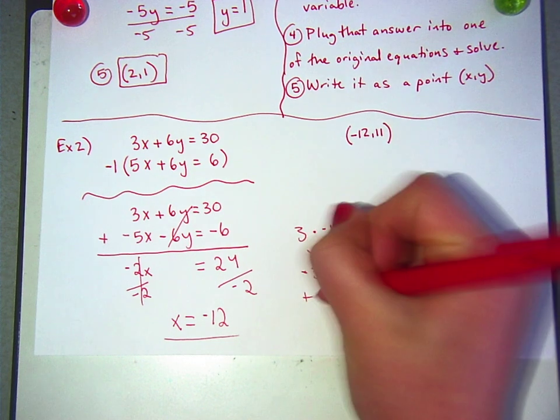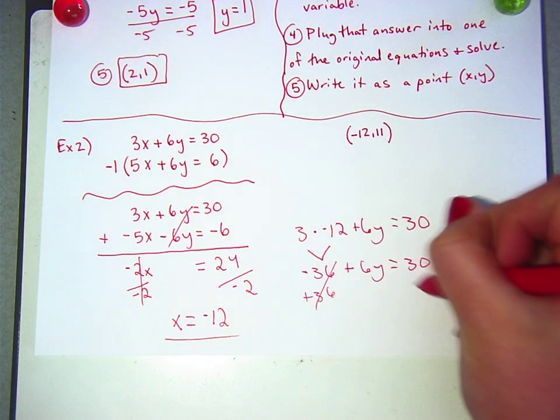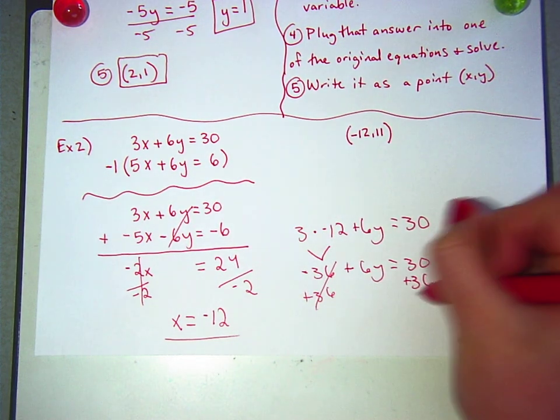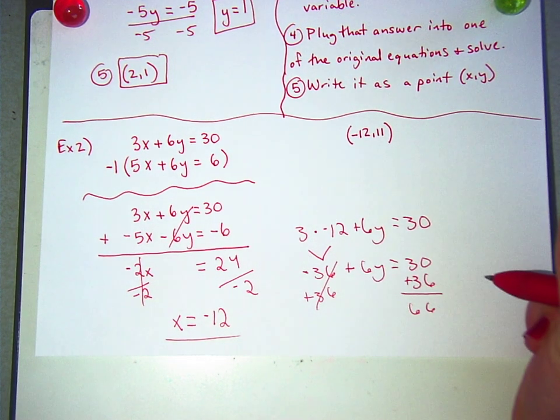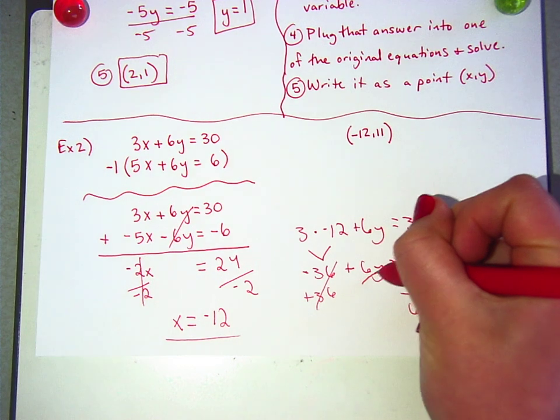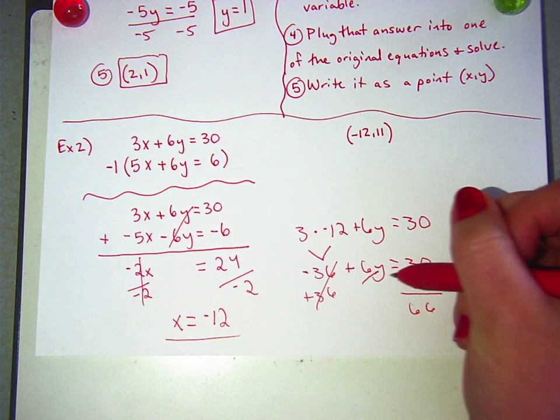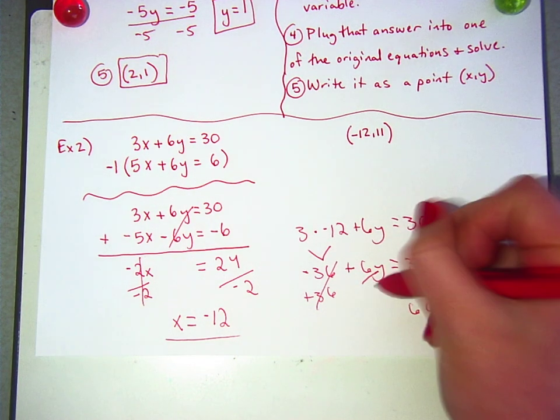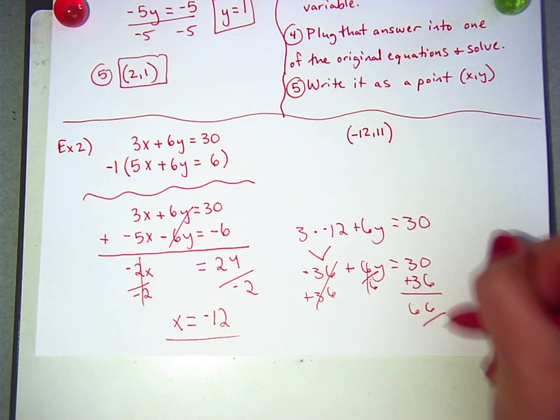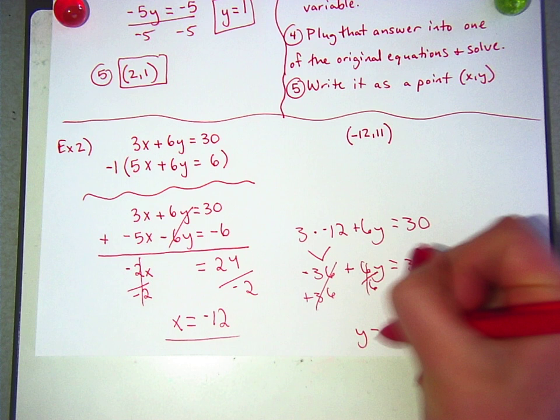And 36 plus 6y equals 30. Now you add 36 on both sides. It ends up being 6y equals 66. There you said it. 6y equals 66. And then you divide by 6 on both sides.